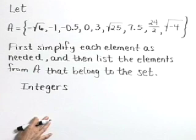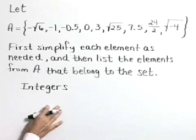First simplify each element as needed and then list the elements from A that belong to the set. Here we have a set of integers.